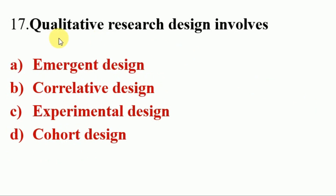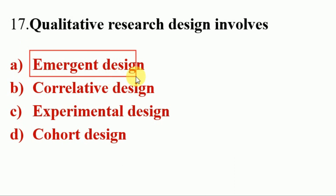Next question. Qualitative research design involves — Options A. Emergent design, B. Correlative design, C. Expanded design, D. Cohort design. Answer is A. Emergent design. So qualitative research design involves Emergent design, meaning that the design is evolved during the course of the study.